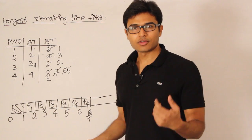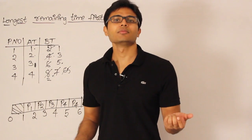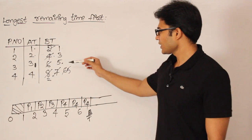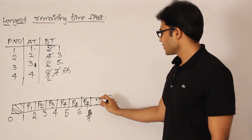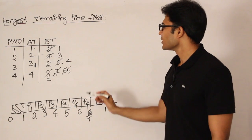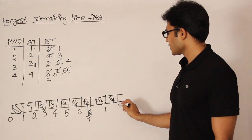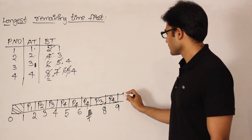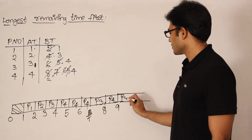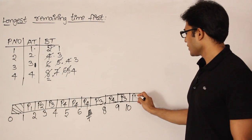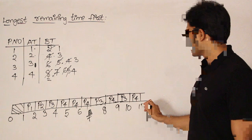Now two processes have the same burst time of 5 — both are tied as longest. When there is a tie in burst times, we break the tie by arrival time, choosing whichever arrived earlier. There's a tie between P3 and P4, and P3 arrived earlier, so P3 gets scheduled for one unit, making its burst time 4. Now P4 has become longer again, so P4 is scheduled for one unit bringing it to 4, and then P3 becomes longer again.